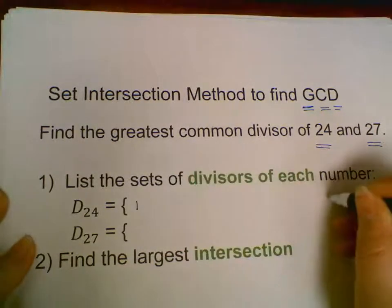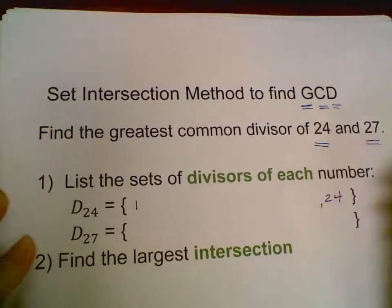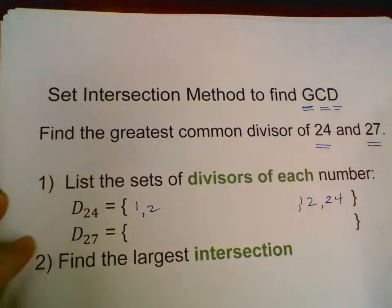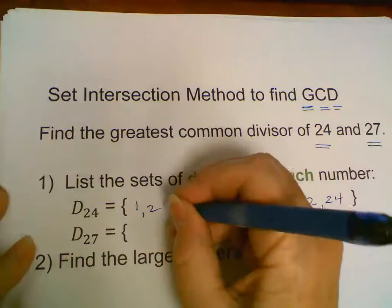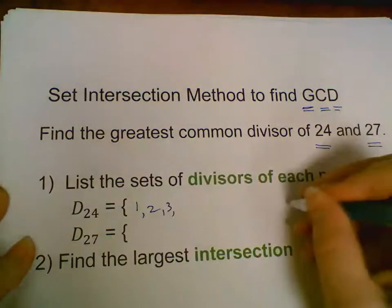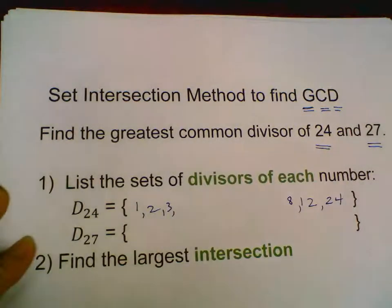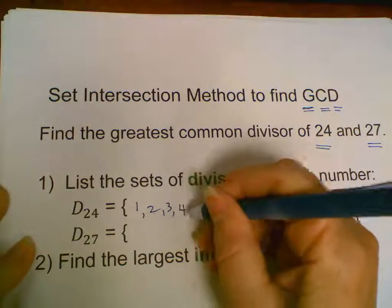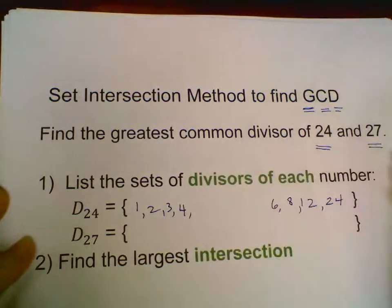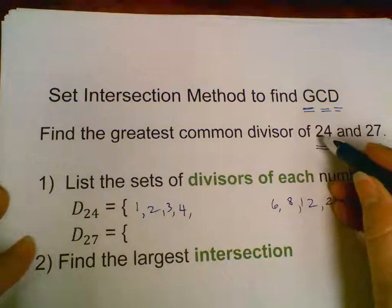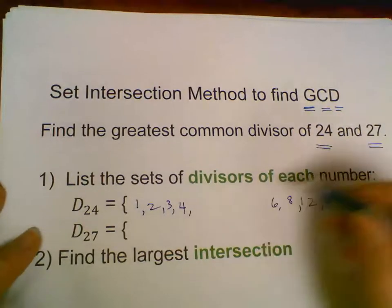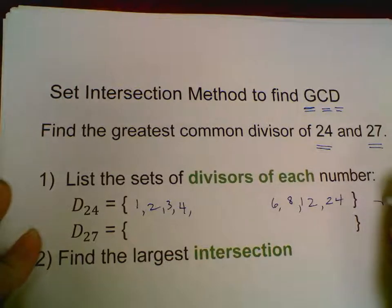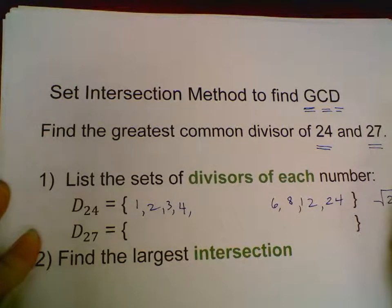So I need to find the factors of 24 and 27. Let's list them out. First we'll start with 24: 1 times 24 is 24, 2 times 12 is 24, 3 divides into 24 eight times, and we continue on. Does 4 divide into 24? Yes, 6 times. Does 5 divide into 24? No, so I won't write it down.